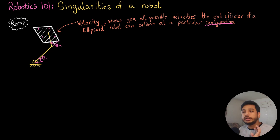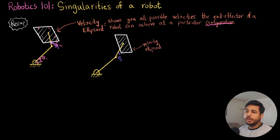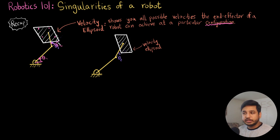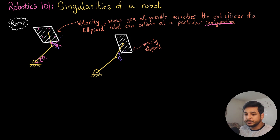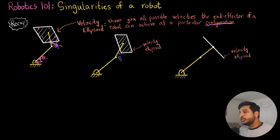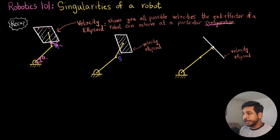If I give you any velocity within this ellipsoid, you can be sure that the robot is capable of achieving those velocities. Now if I reduce theta_2, we can see that the velocity ellipsoid kind of flattens and shrinks. If I make theta_2 equal to 0, the velocity ellipsoid has just shrunk to a single line.